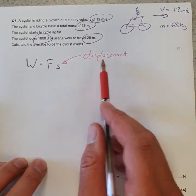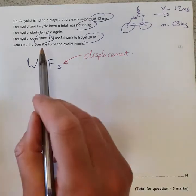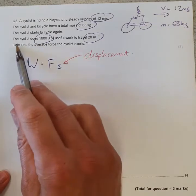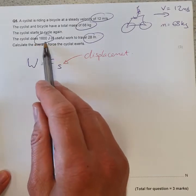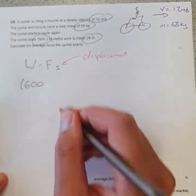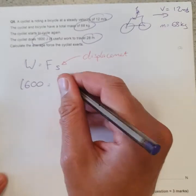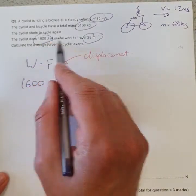So we need a displacement, force, and the work done. Let's think about what do we know in this question - what are we given? Well, we know the work done, the useful energy that has been transferred, is 1600 joules. We want to know the force.